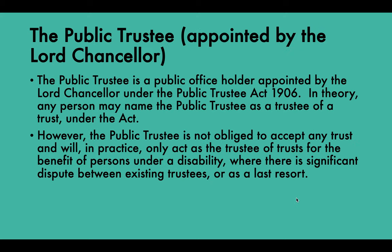Finally, we have the Public Trustee, who is appointed by the Lord Chancellor under the Public Trustee Act 1906. In theory, any person may name the Public Trustee as a trustee of a trust under the Act. However, the Public Trustee is not obliged to accept any trust and will in practice only act as trustee of trusts for the benefit of persons under a disability, where there is significant dispute between existing trustees, or as a last resort. Generally, the Public Trustee will accept the position when dealing with trusts for the benefit of a minor, a person with a disability, or someone who needs extra care.